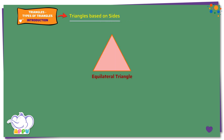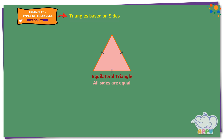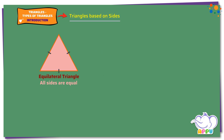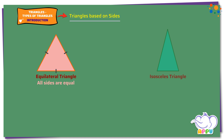Equilateral triangle. An equilateral triangle is a triangle that has all sides equal. When the sides are equal, we mark the side with a hatch mark. Here we mark all three sides with a single hatch mark.